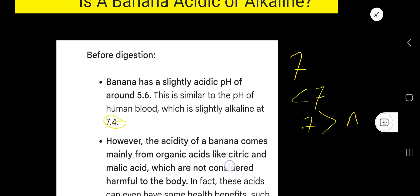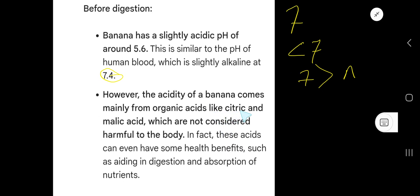The acidity of a banana comes mainly from organic acids like citric and malic acid, which are not considered harmful to the body. In fact, these acids can have some health benefits, such as aiding in digestion and absorption of nutrients.